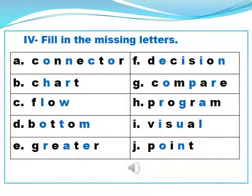Exercise 4 on page number 32 — fill in the missing letters. Dear students, read these words carefully, fill the missing letters properly and make the word correctly. A. The missing letters are O, N, C, O and the correct word is connector. B. The missing letters are H and R and the correct word is chart.